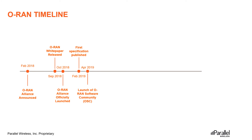In April 2019, ORAN Alliance started a preliminary discussion with Linux Foundation. Then, in October 2018, an Open Source Focus Group was formed within ORAN Alliance. Finally, on the 2nd of April 2019, the ORAN Software Community was officially set up.